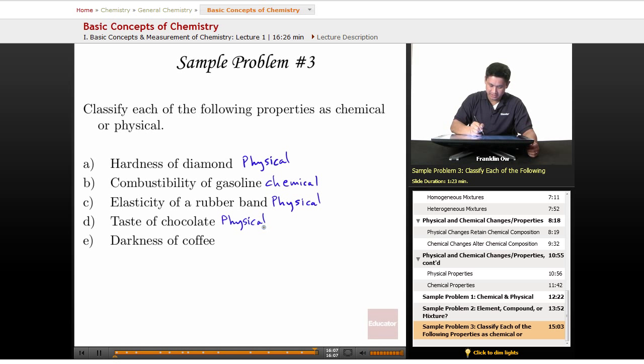And finally, the darkness of coffee describes color, which we use our senses to detect. So darkness of coffee is going to be an example of a physical property.